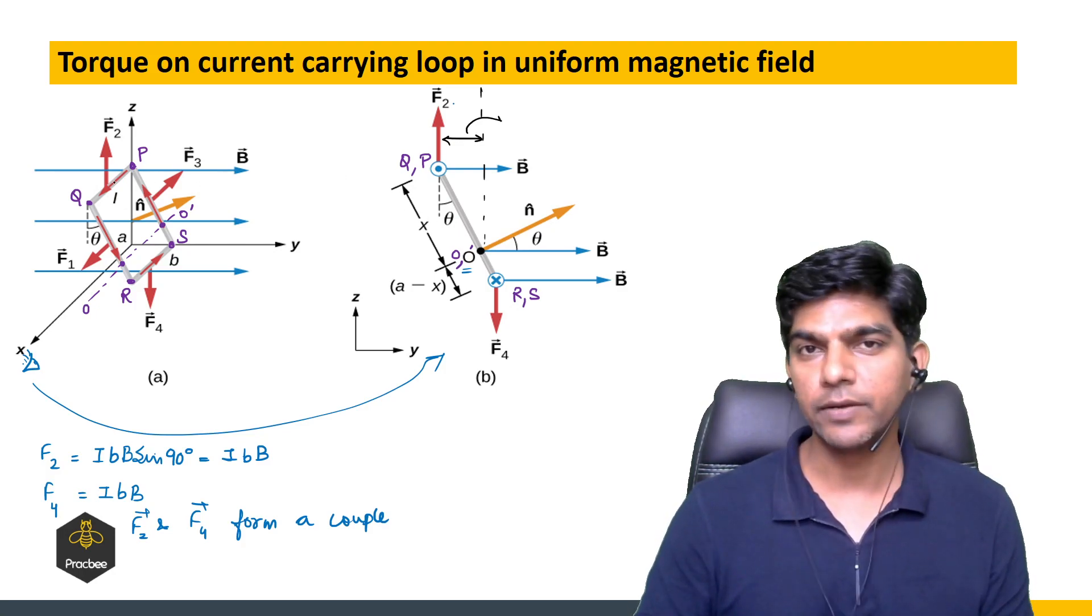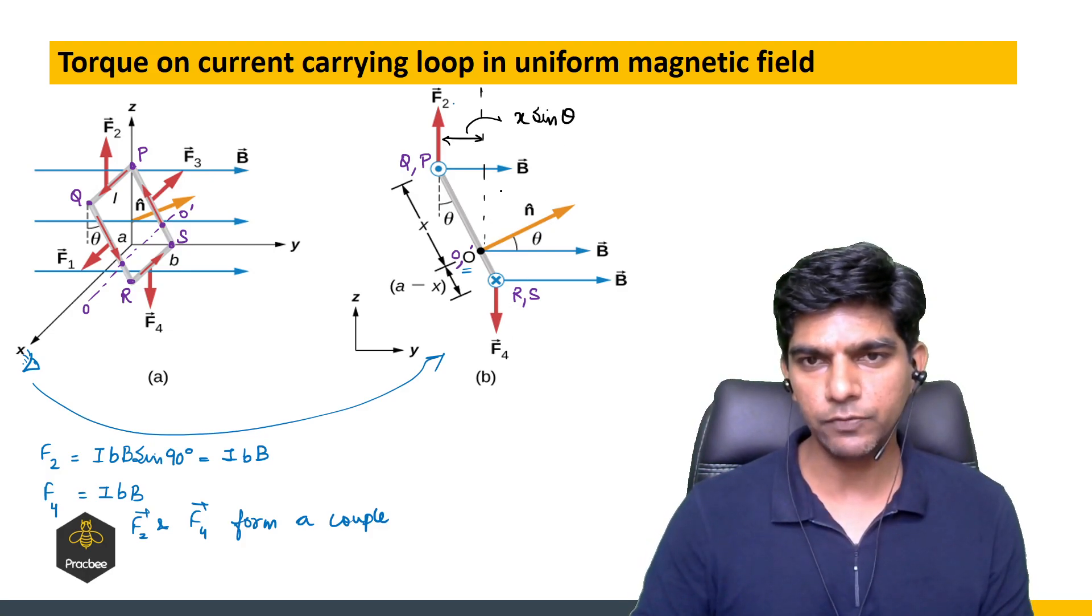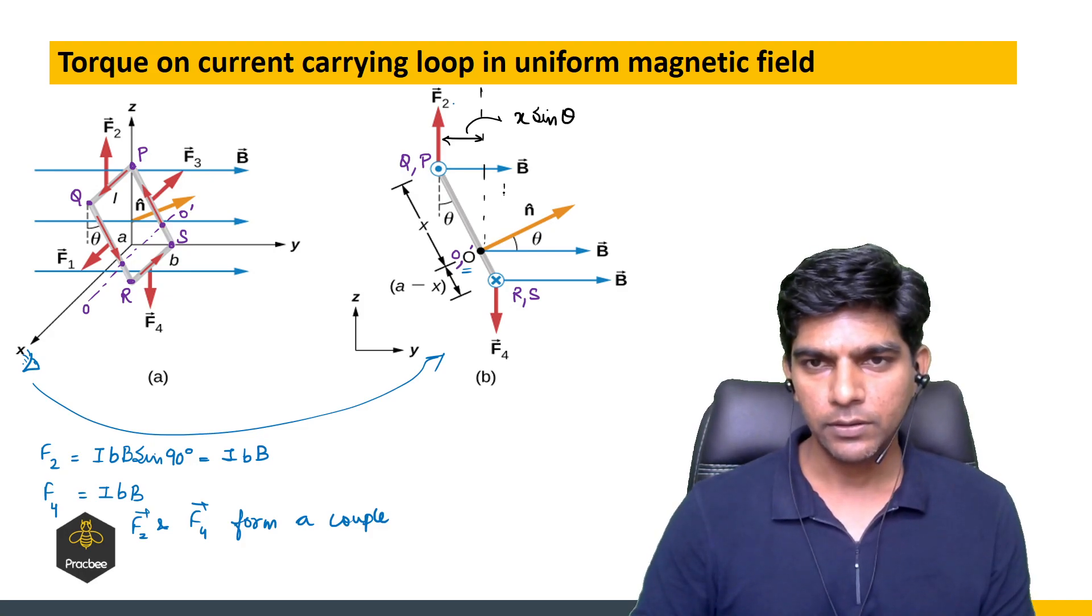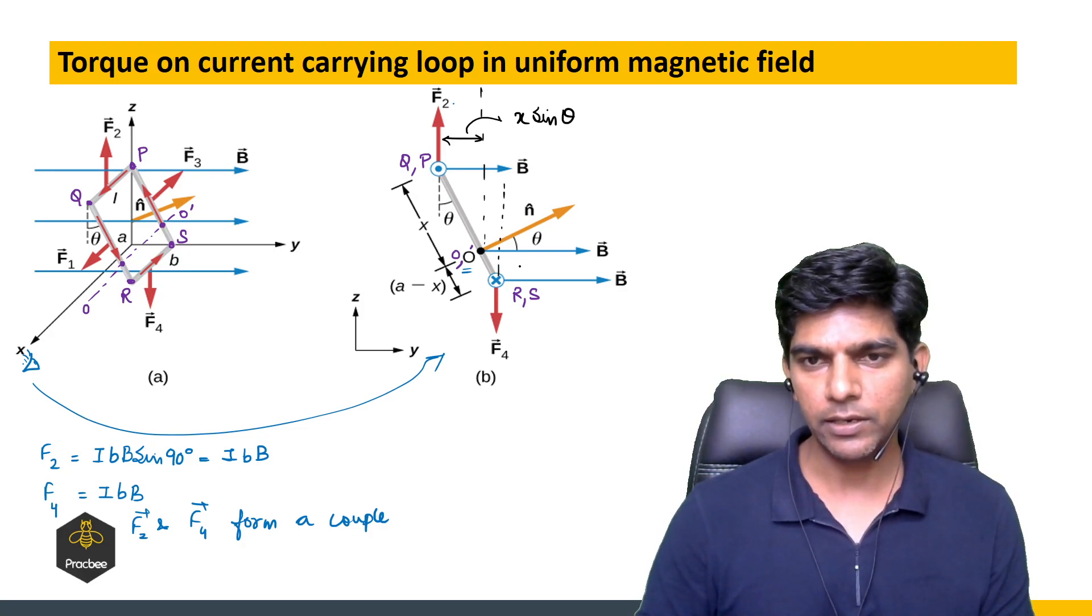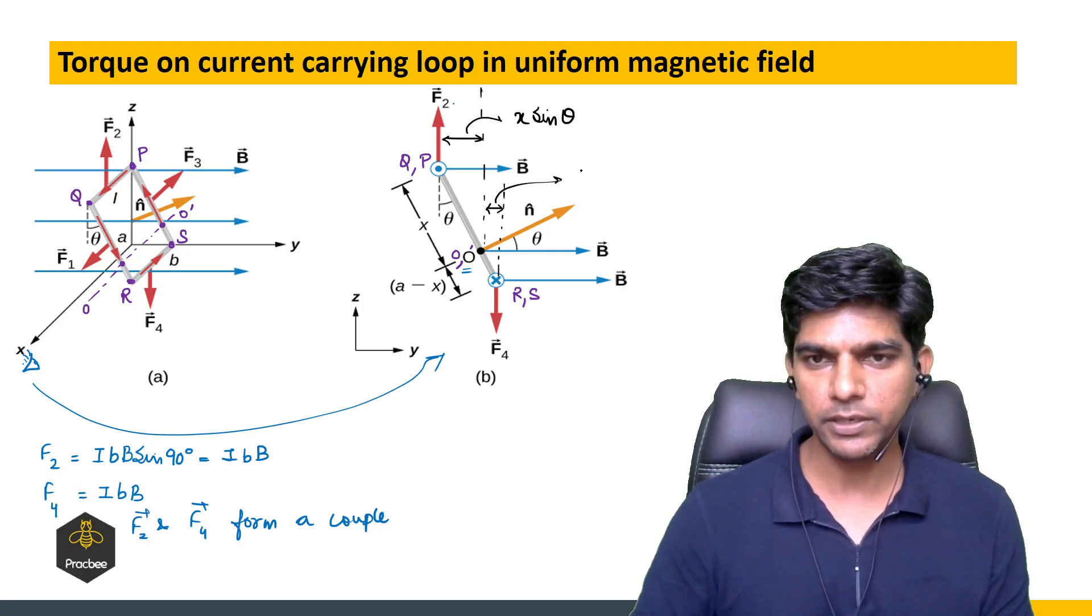So this distance will be - you can see that the axis of rotation is at a distance of X from the side PQ, so this becomes X sin theta. Similarly the perpendicular distance between the line of action of F4 and the axis comes out to be A minus X sin theta.